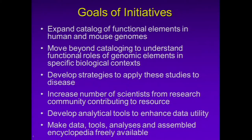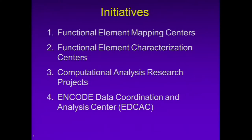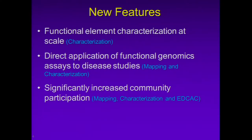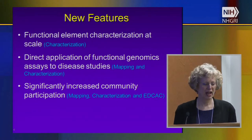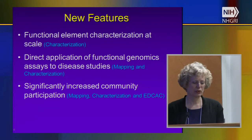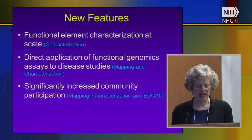In order to accomplish these goals, we are proposing four initiatives. The first is functional element mapping centers. The second is functional element characterization centers. There are computational analysis research projects. And the fourth is the ENCODE Data Coordination and Analysis Center, fondly known as the EDCAC. Key new features include functional characterization at scale, direct application of functional genomics assays to disease studies, and significantly increased community participation through the mapping centers, characterization centers, and data submission to the EDCAC.